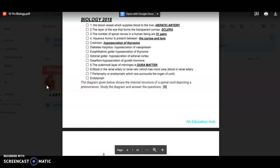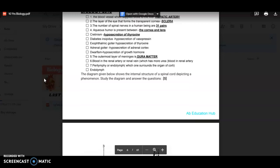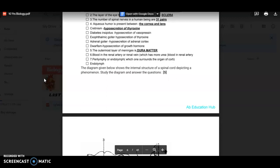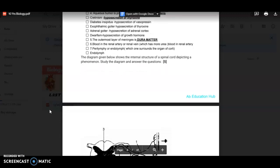Cretinism, it is the hyposecretion of thyroxine. Diabetes insipidus, hyposecretion of vasopressin. And there is this other disease, diabetes mellitus. Exophthalmic goiter, the hypersecretion of thyroxine. Then adrenal goiter, the hyposecretion of adrenal cortex. Dwarfism, hyposecretion of growth hormone that is present in the pituitary gland. The outermost layer of meninges is dura mater. Blood in the renal artery or renal vein which has more urea? Blood in renal artery.